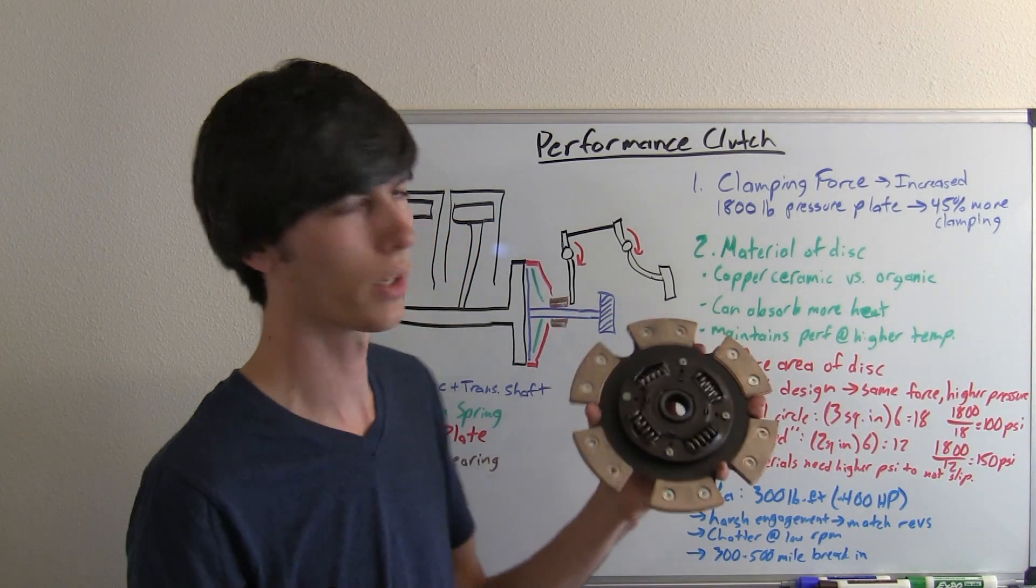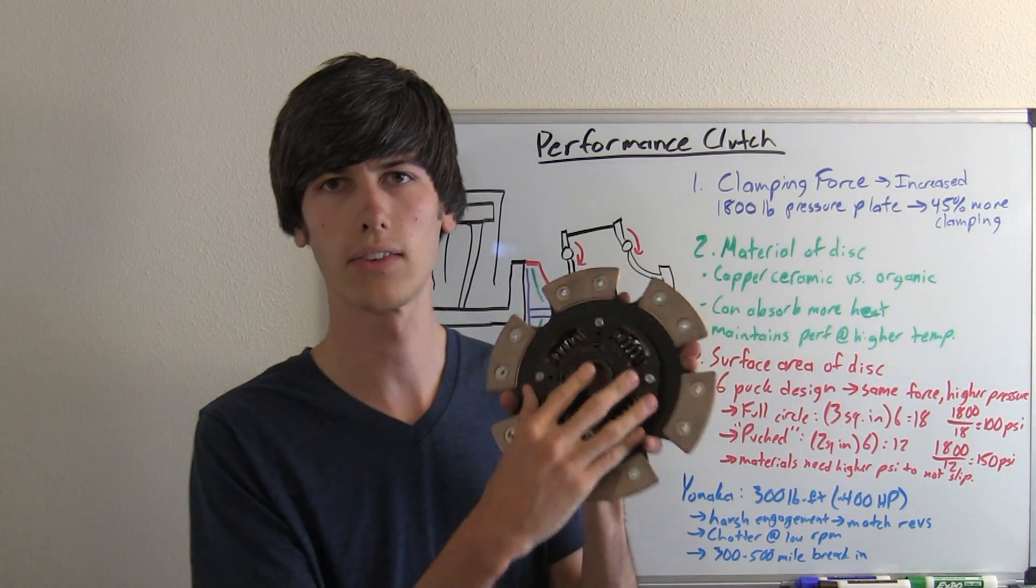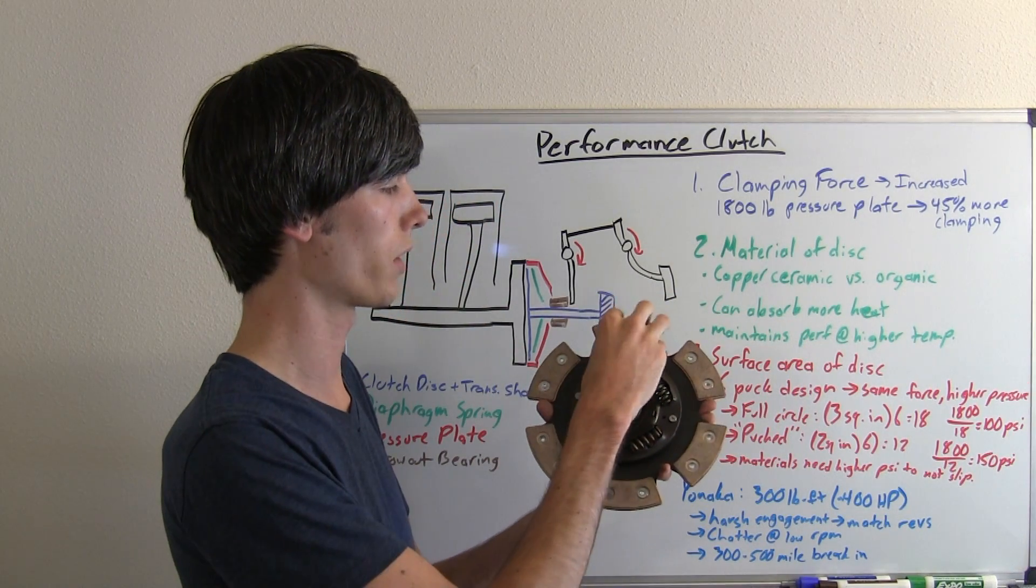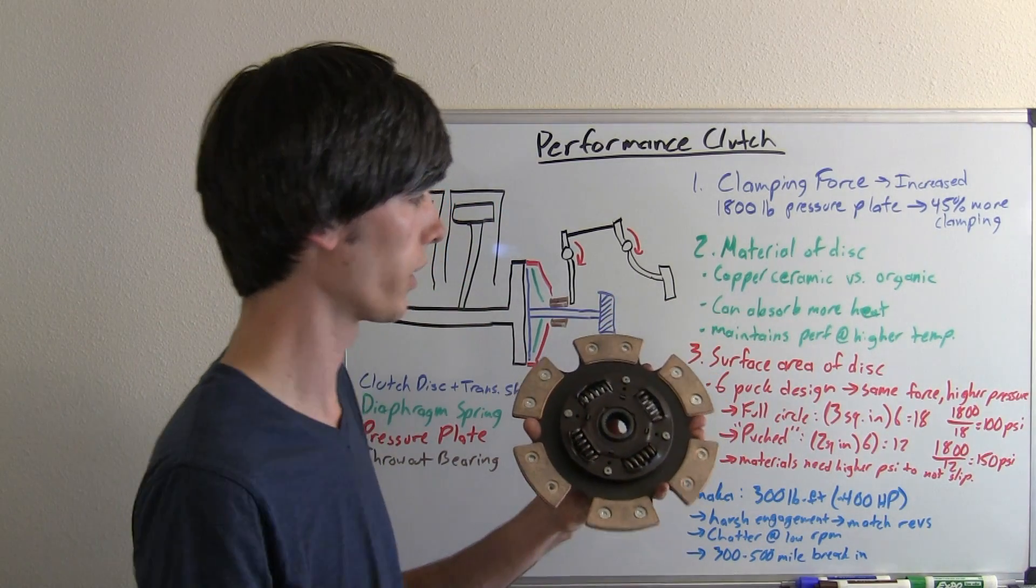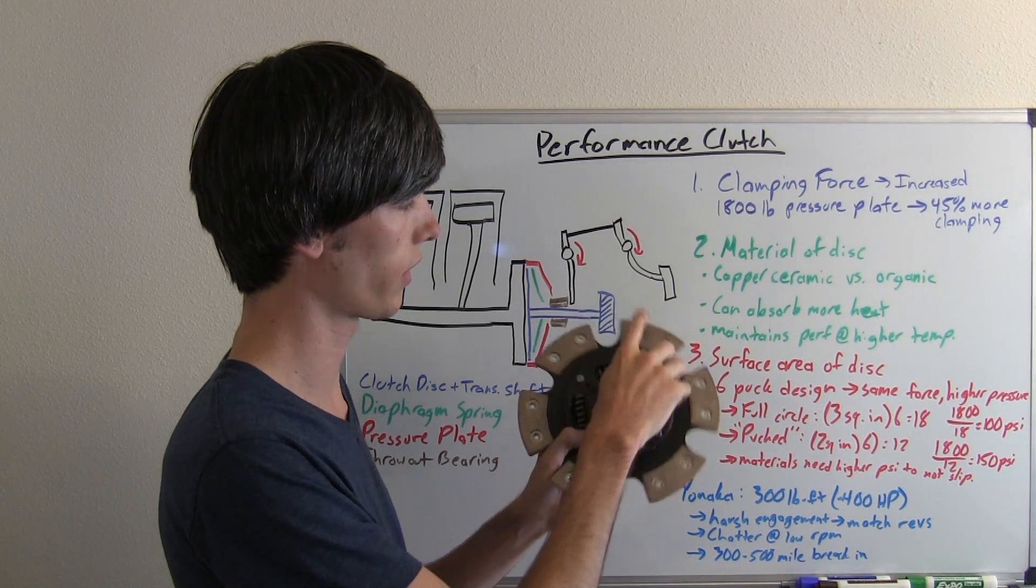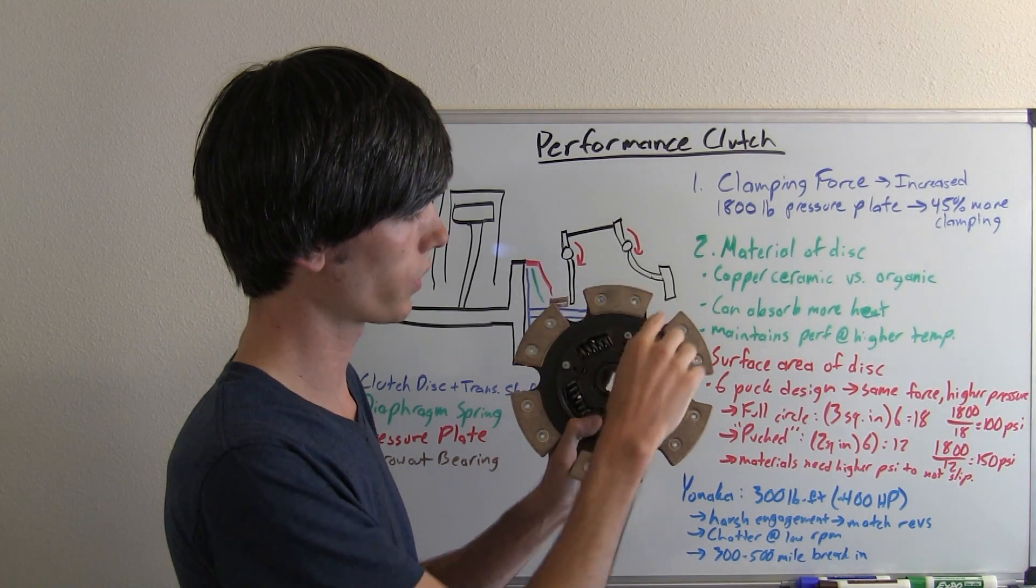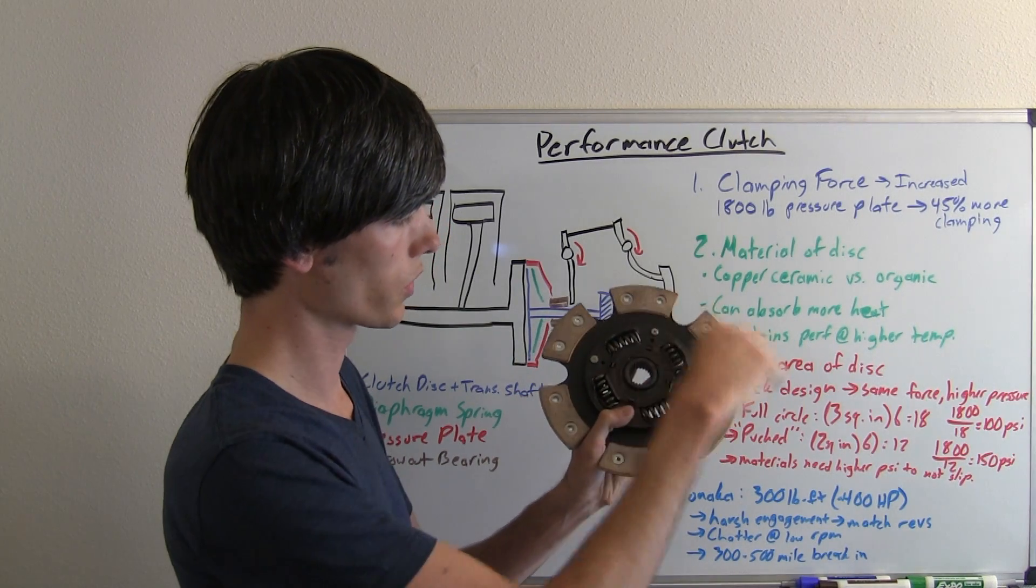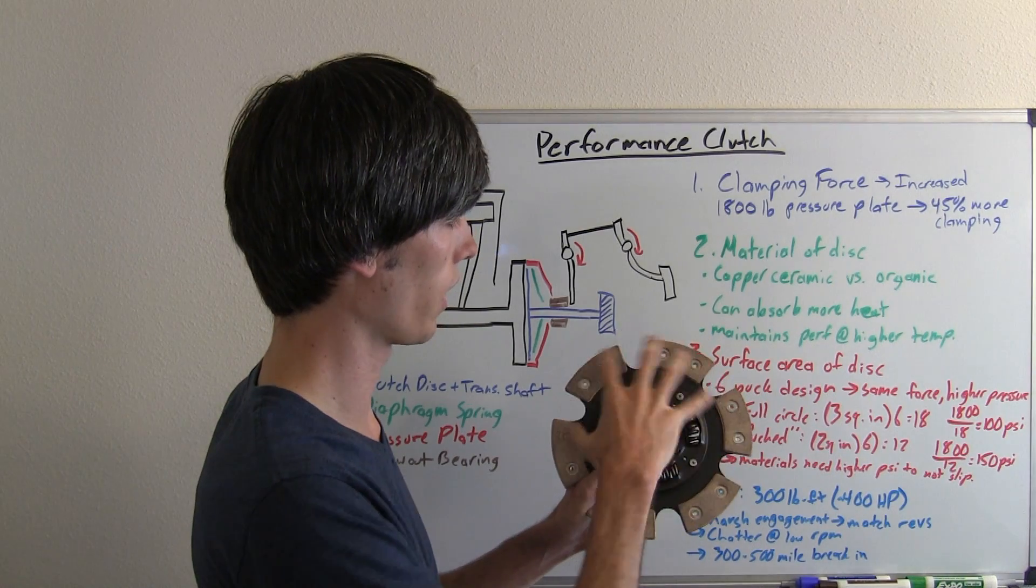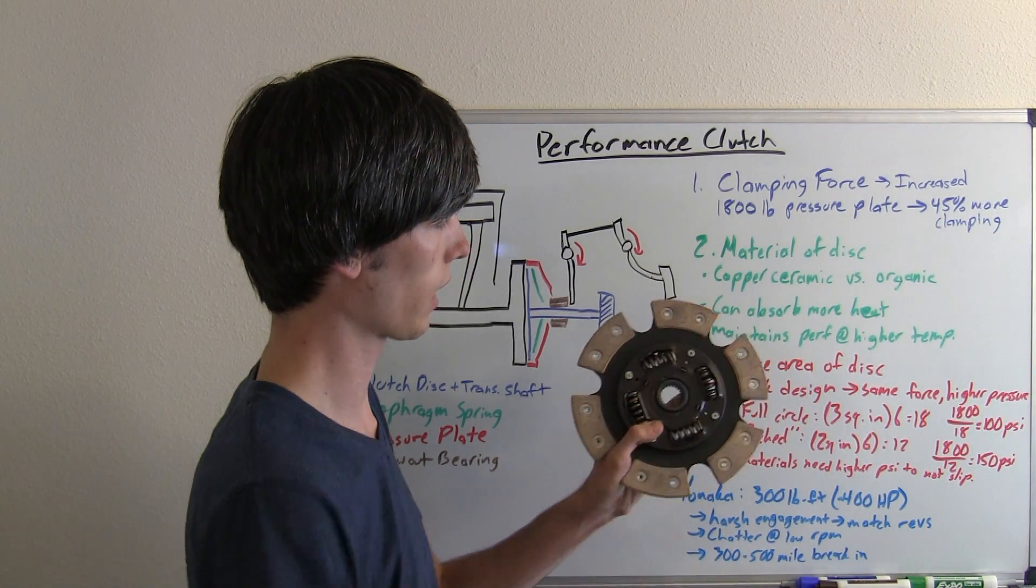But basically what you're doing is the clamping force will remain the same on this, however the amount of pressure on each individual puck will increase. So kind of just some rough math here, I just kind of said that these were about two square inches and this is about a square inch here.